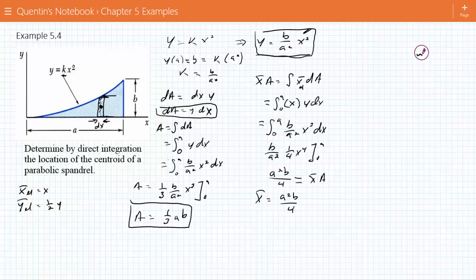x bar is equal to a squared b over 4, right? Divided by 1 third a b. So the b is going to cancel. One of the a's is going to cancel. And therefore, x bar is equal to 3 fourths A.